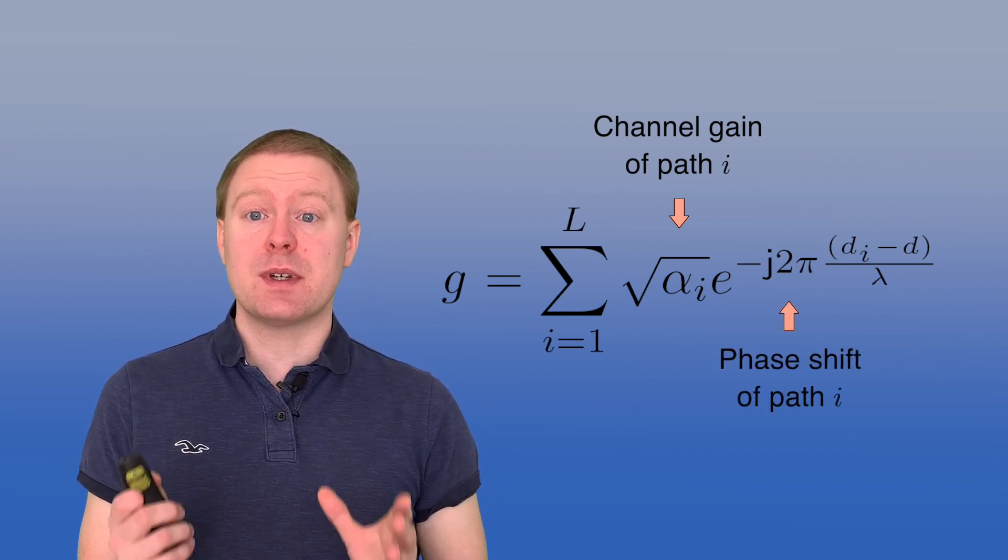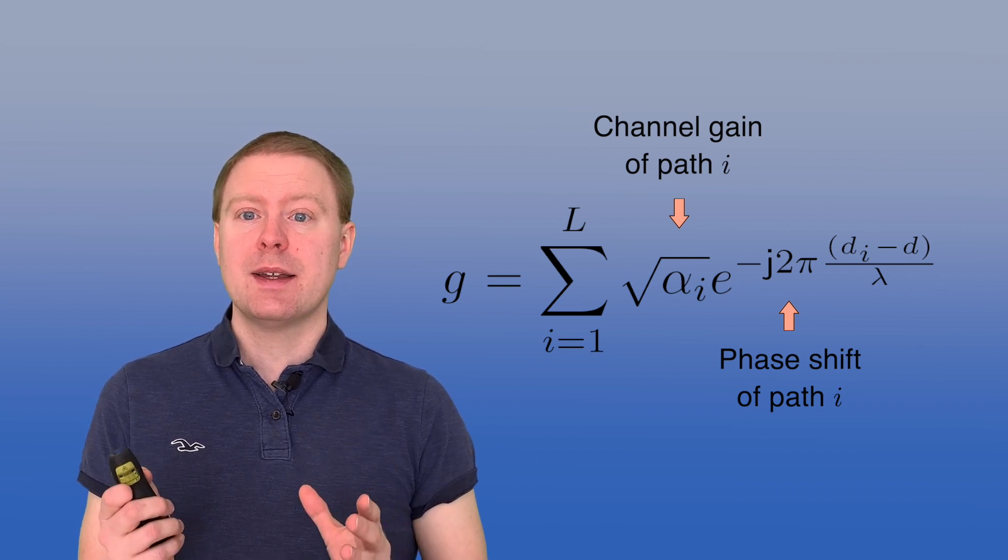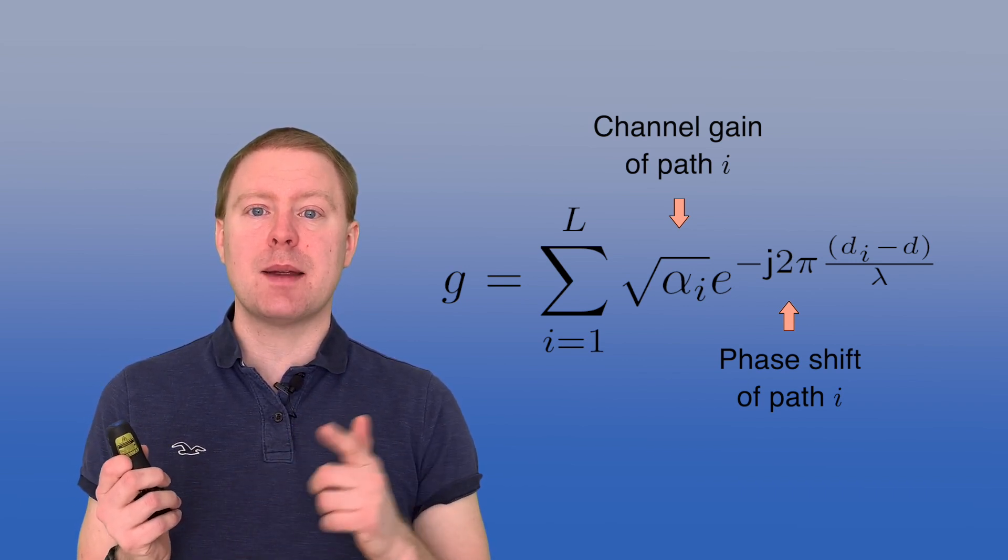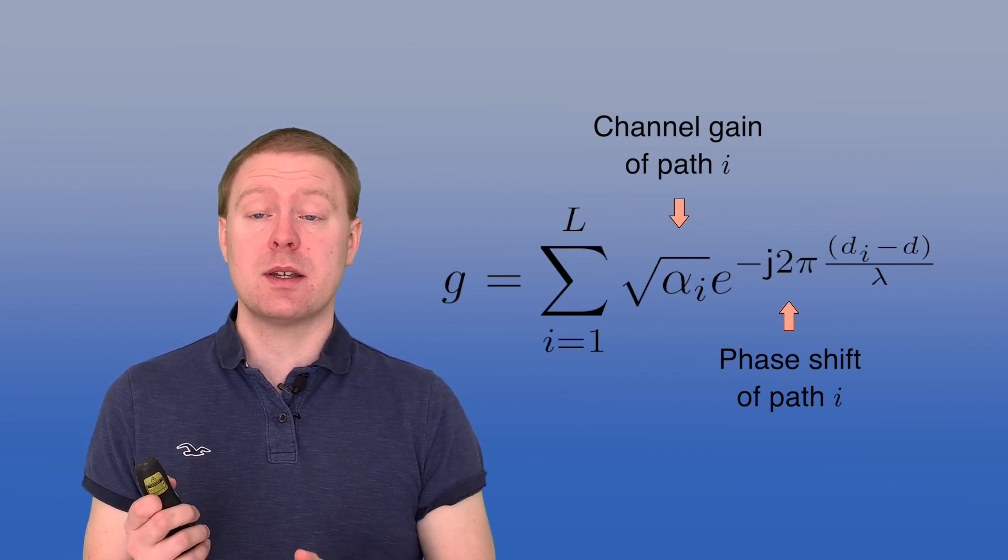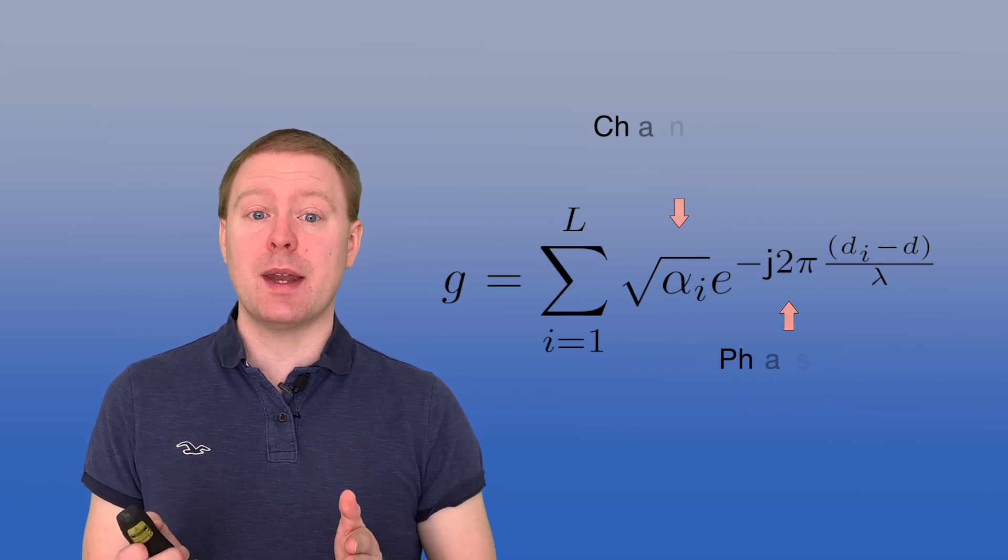And then we have a phase shift, e to the power of minus 2π. We have the propagation distance, d_i minus some kind of reference distance, and then we divide by the wavelength λ.